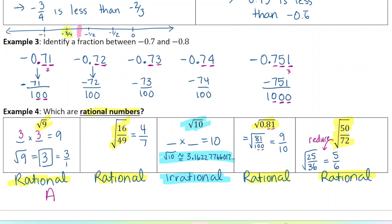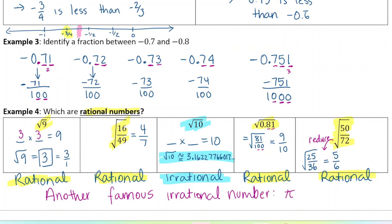Just as a quick aside, another famous irrational number that we've all probably heard of is pi. Pi does not repeat, has no repeating pattern — 3.14159... and so on. There are people who memorize thousands of decimal places in competitions. It cannot be written as a fraction. And that is the end of the lesson.